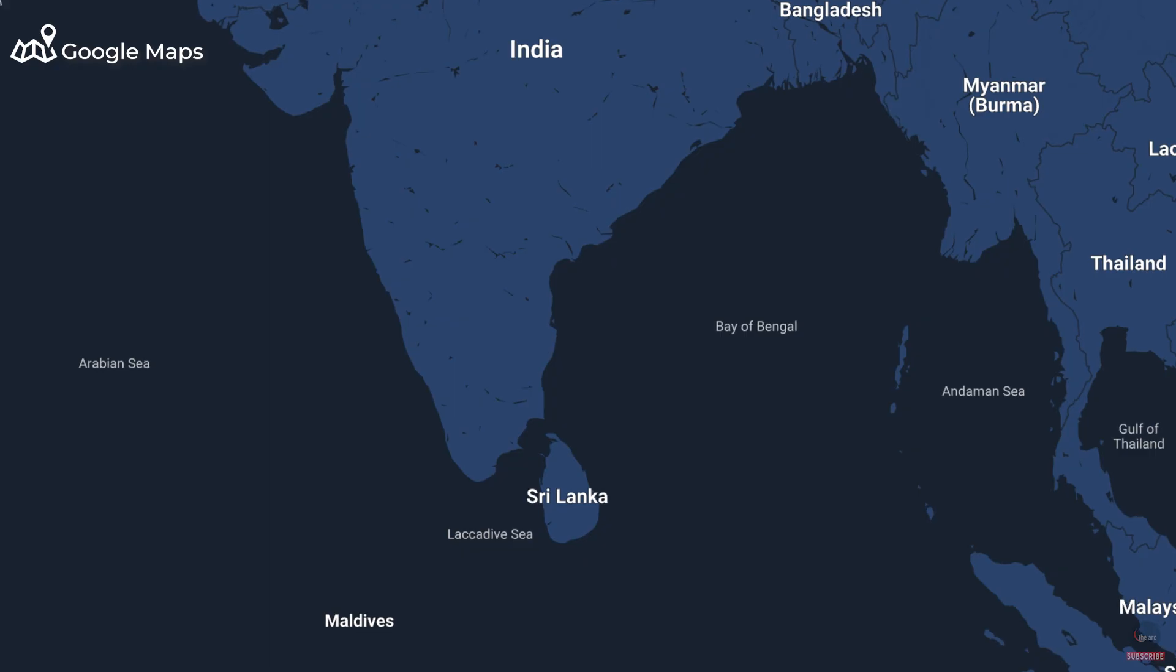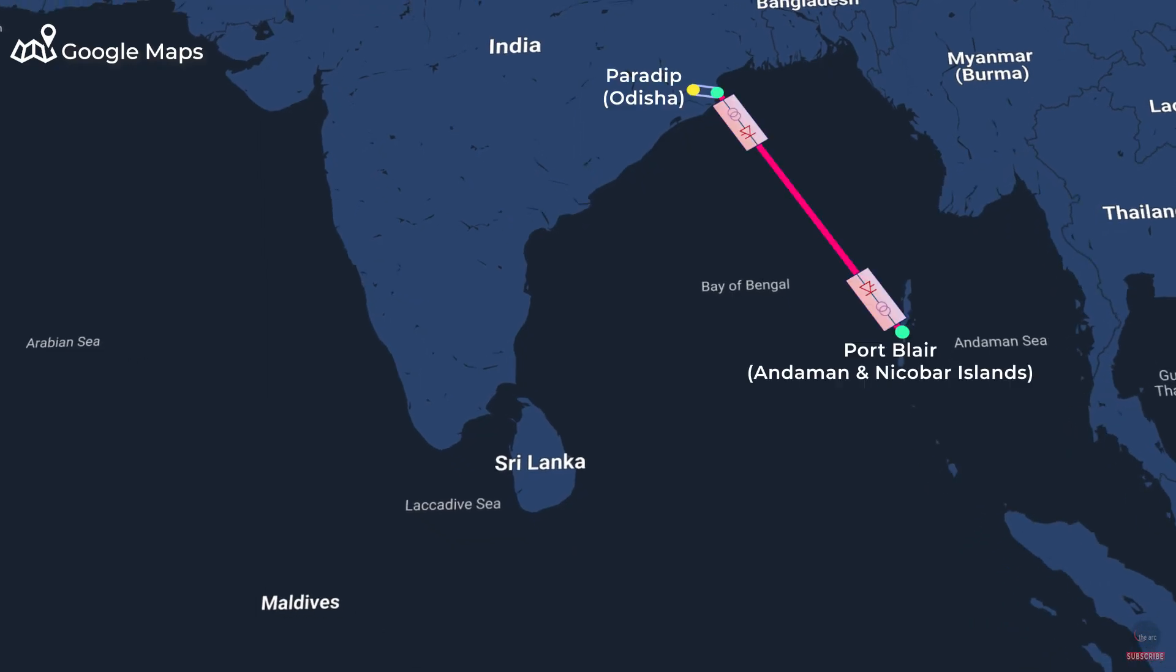The project aims to connect Andaman and Nicobar Islands with the mainland of the country through HVDC undersea power cables. It will be a plus minus 320 kV, 250 MW HVDC voltage source converter interconnection between Paradip in Odisha and Port Blair, the capital city of Andaman and Nicobar Islands on southern Andaman Island. The total length of the undersea cable would be 1,150 km.